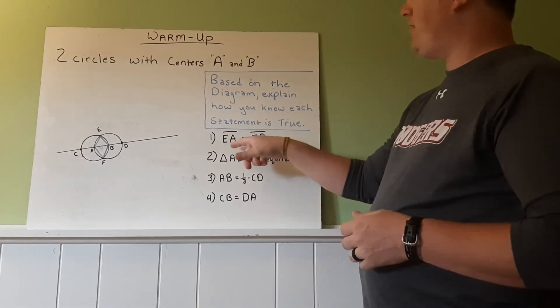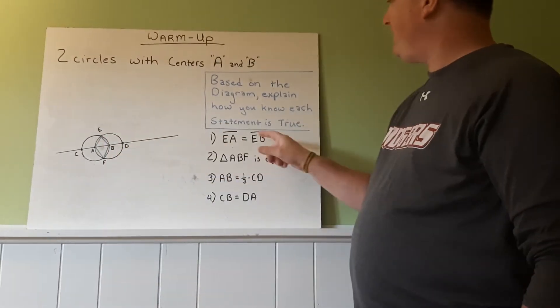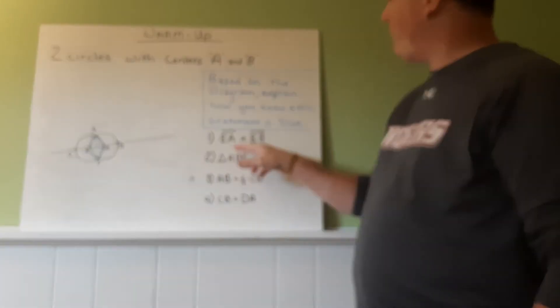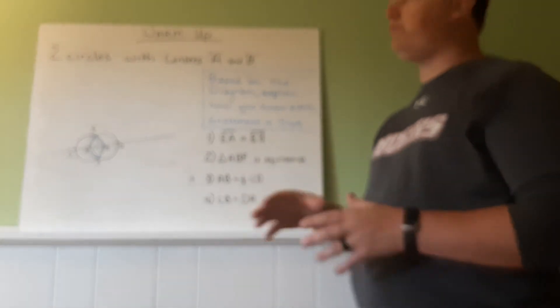All right. So the first one we want to look at is segment EA and segment EB. And we're saying that they're equal. So why are those two segments equal?